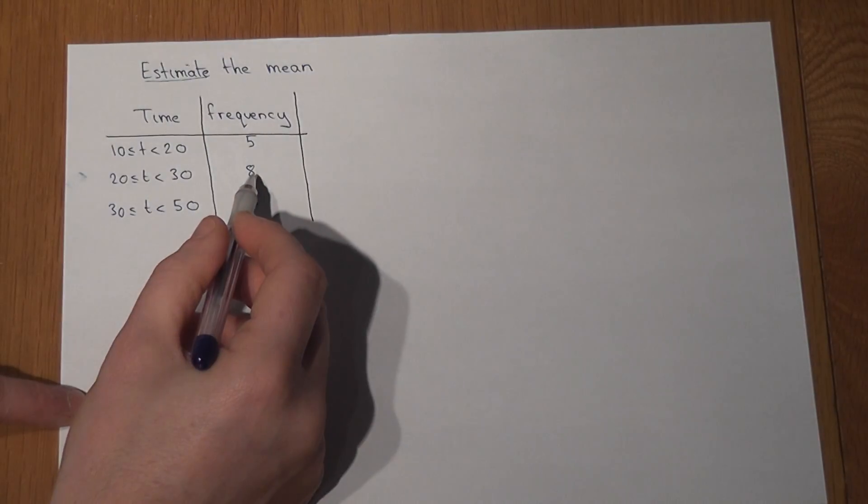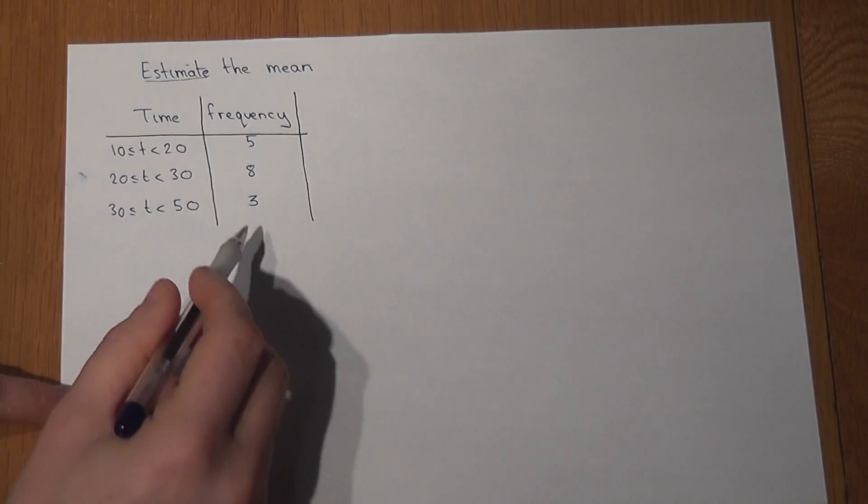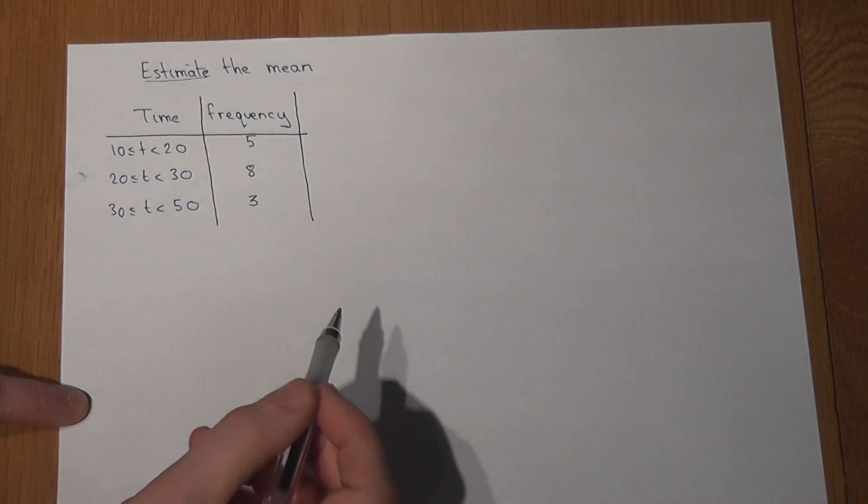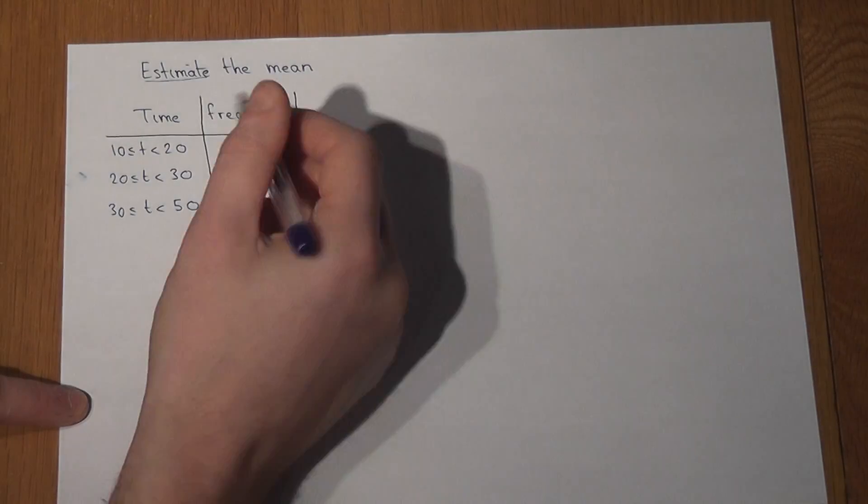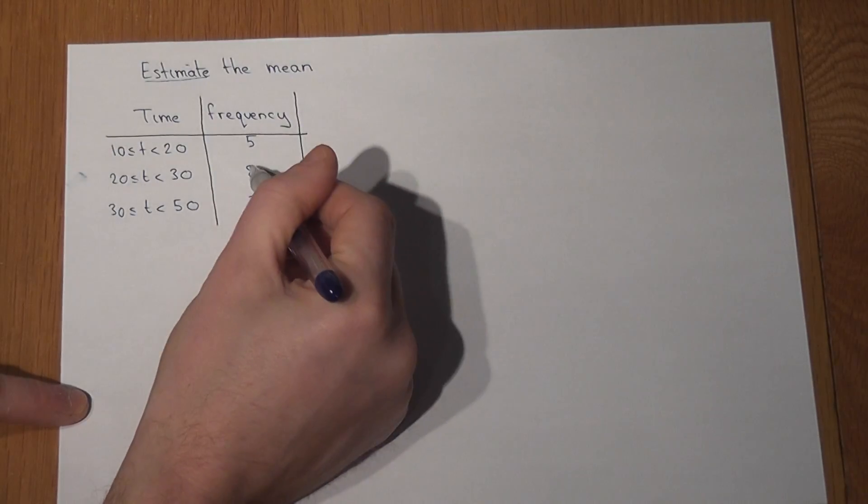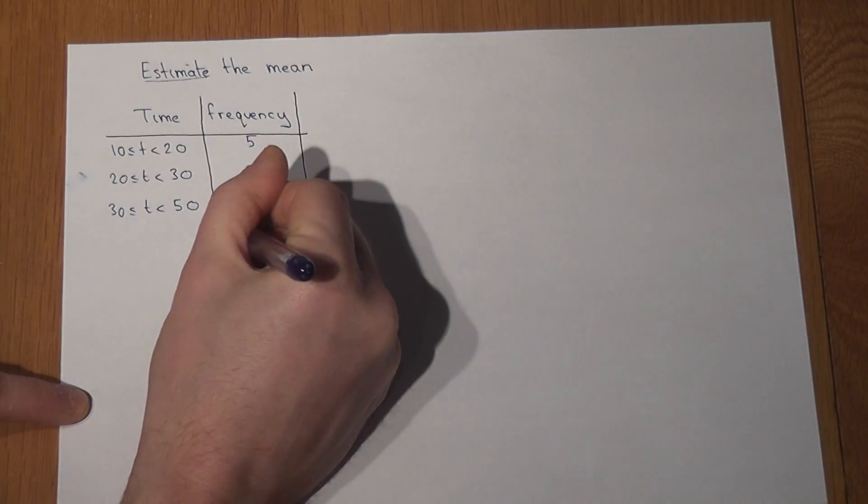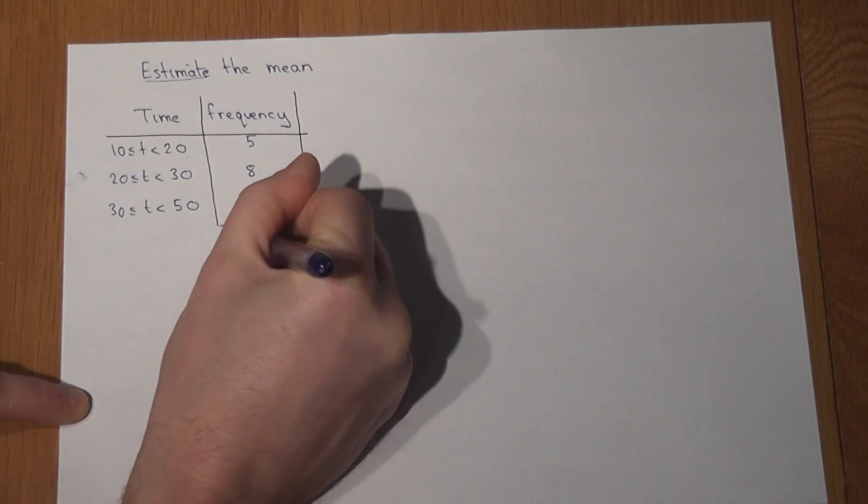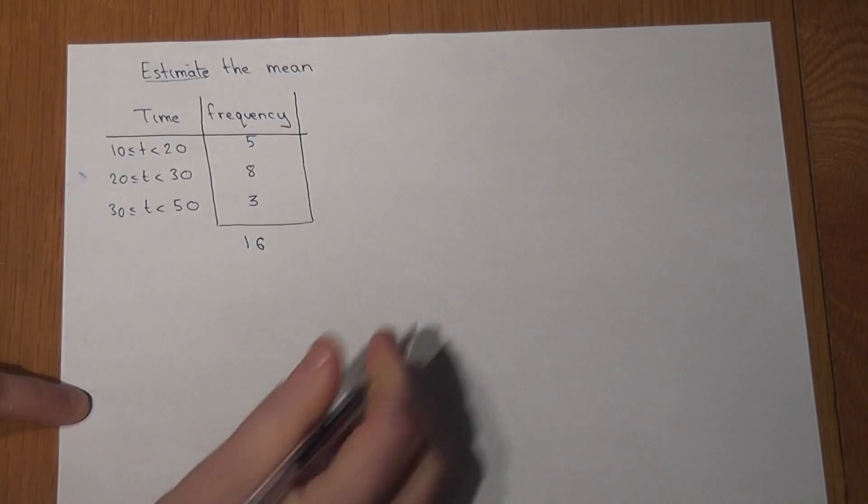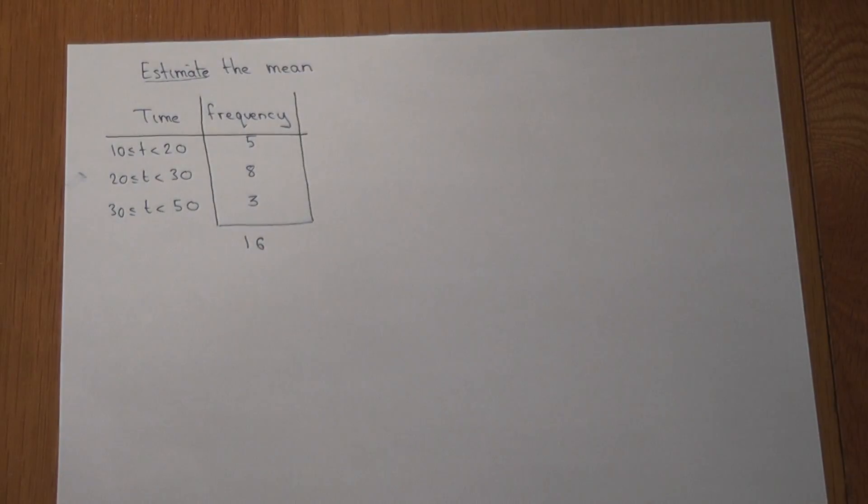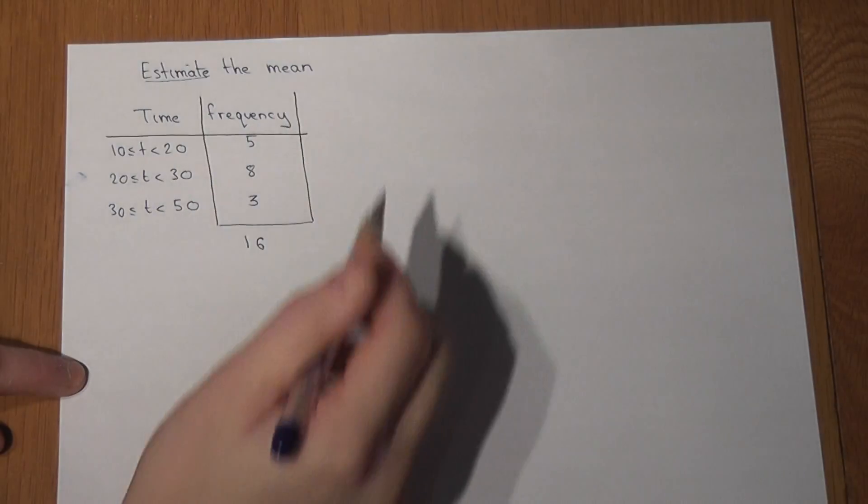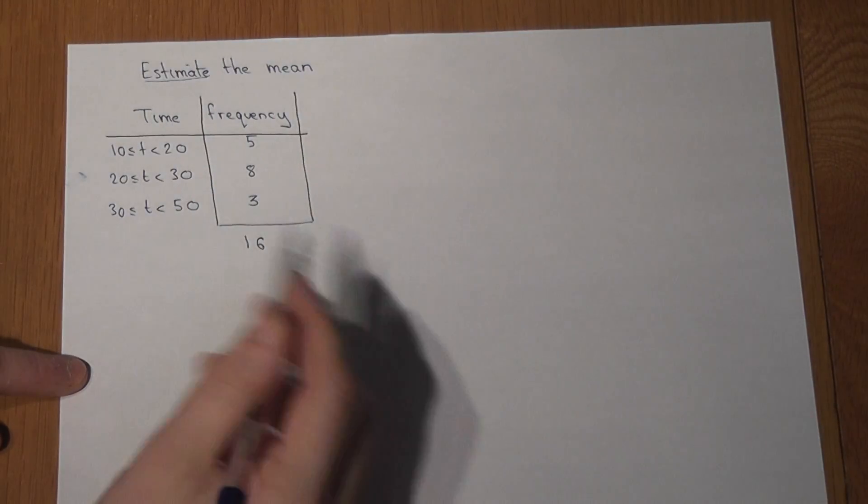Three people took between 30 and 50 seconds. So in total, 5 plus 8 plus 3 equals 16 people took part in the race. Now to estimate the mean, I've got to find roughly what all their times added up to, and we do the following calculations.